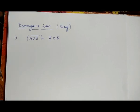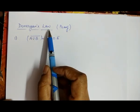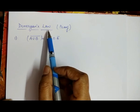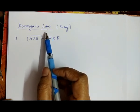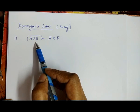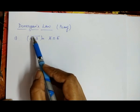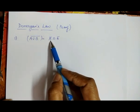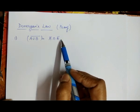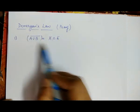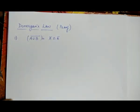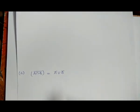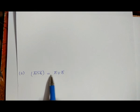Hello friends, today we are going to discuss the proofs of de Morgan's law. There are two laws: the first law is A union B whole complement equals A's complement intersection B's complement, and the second law is A intersection B whole complement equals A's complement union B's complement.